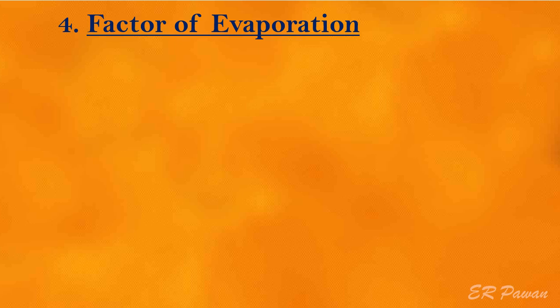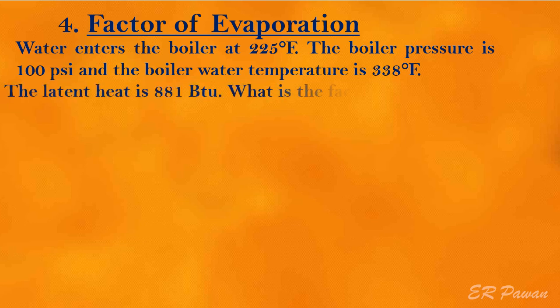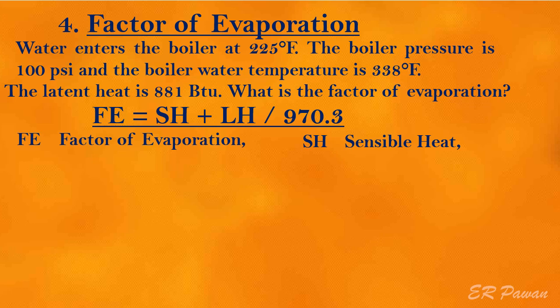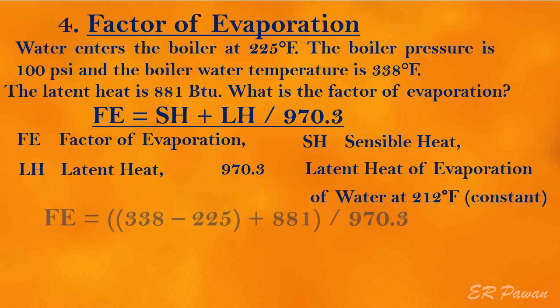Formula 4 — Factor of Evaporation. Water enters the boiler at 225 degrees Fahrenheit, the boiler pressure is 100 pounds per square inch, and the boiler water temperature is 338 degrees Fahrenheit. The latent heat is 881 BTUs. What is the factor of evaporation? FE equals (SH + LH) divided by 970.3. Where FE = factor of evaporation, SH = sensible heat, LH = latent heat, and 970.3 = latent heat of evaporation of water at 212°F (constant). Let's put the value in the formula.